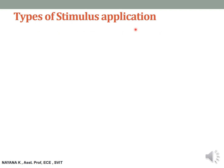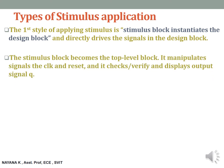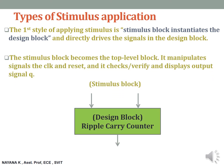There are two types of stimulus application in Verilog. In the first type of applying stimulus, the stimulus block will instantiate the design block and it directly drives the signals in the design block. Observe: this is a stimulus block — a separate code is written. This stimulus block instantiates the design block. Here we consider the ripple carry counter as the design block. From the stimulus block to the design block we pass the input signals. The stimulus is applied; the design block processes those set of inputs and provides the necessary output accordingly.